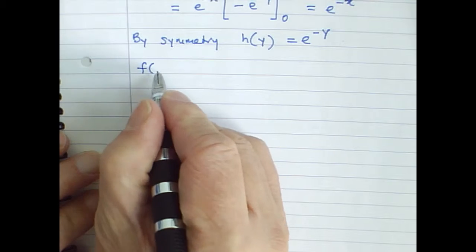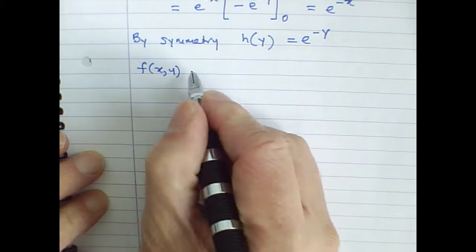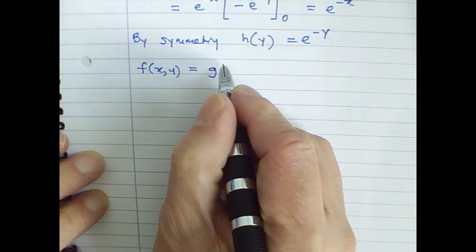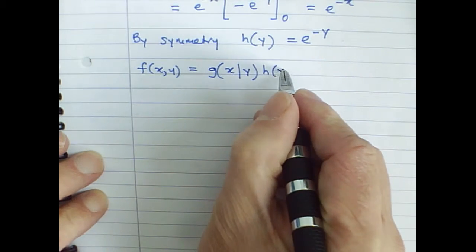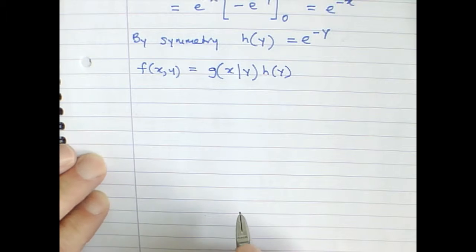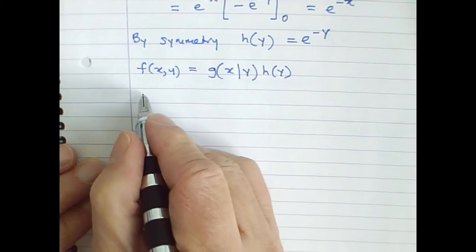Next, to derive the conditional distribution, we recall that the joint distribution function f(x,y) is equal to the product of the conditional distribution function g(x|y) multiplied by the marginal function h(y).